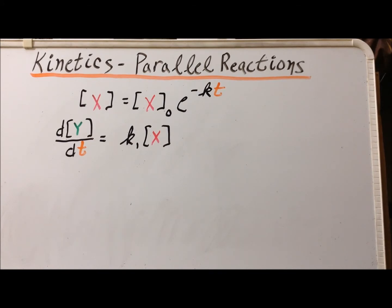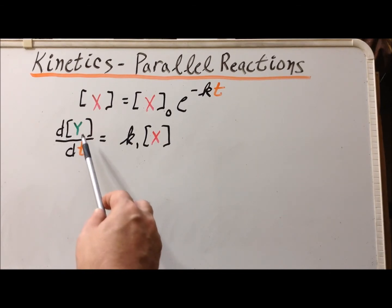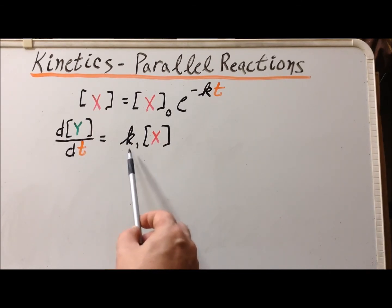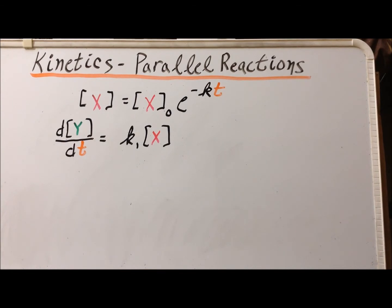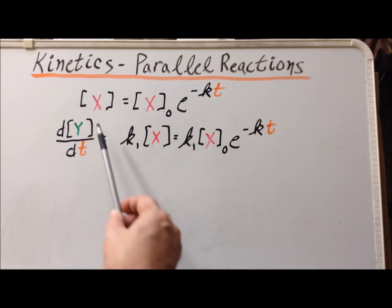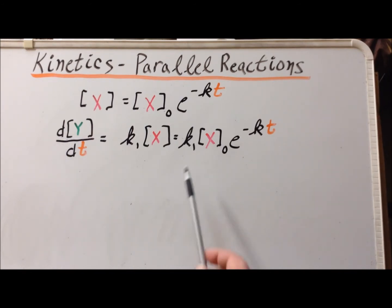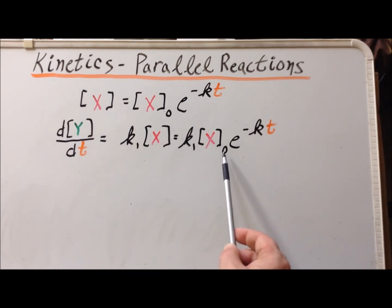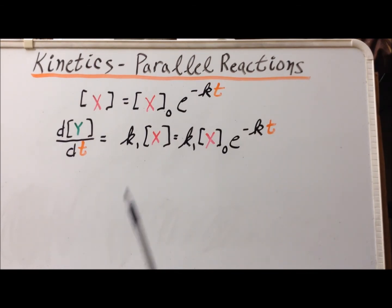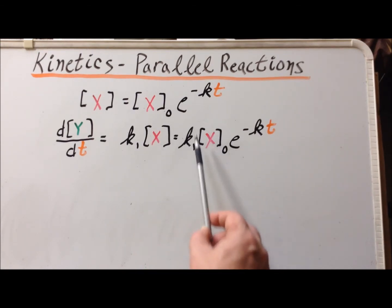Since X is converted into Y with rate constant K1, the rate of formation of Y per unit time equals K1 times [X]. Substituting our expression for [X] at any time, the rate of formation of Y becomes K1 times [X₀] times e^(-KT). Note that while [X] is a variable, [X₀] is a constant.